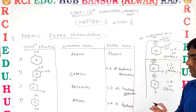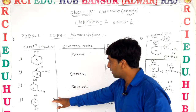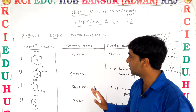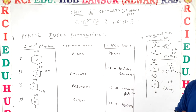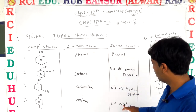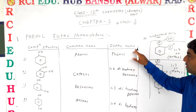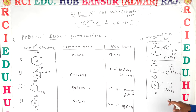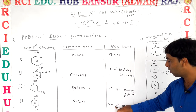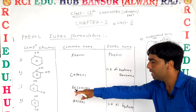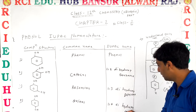Similarly, the next structure also has two substituents, but its common name is different — that is quinol. And its IUPAC nomenclature is also different compared to catechol: it is 1,4-dihydroxybenzene.